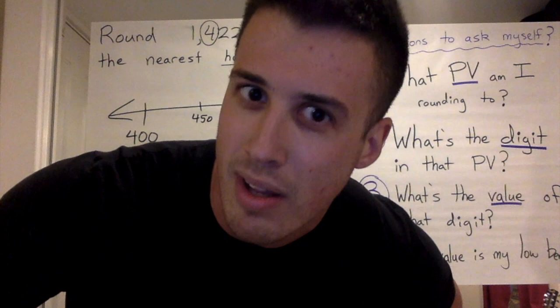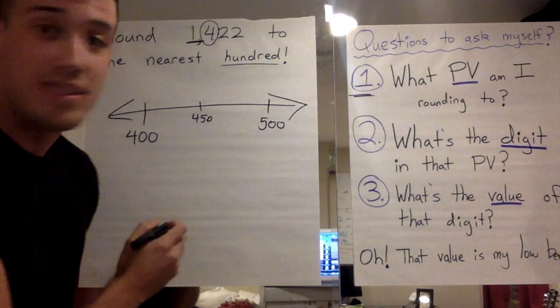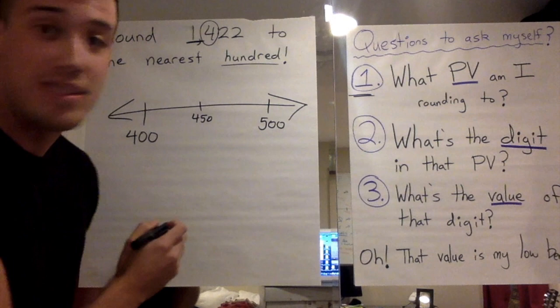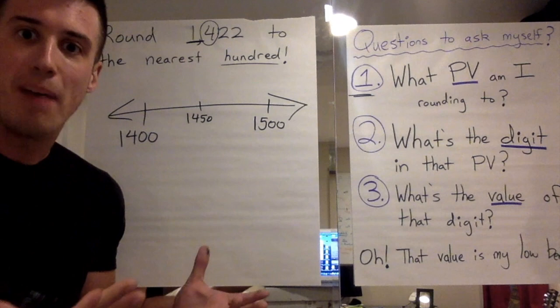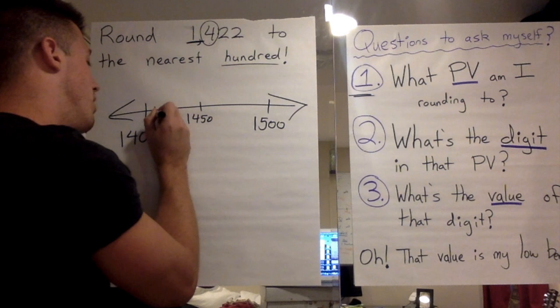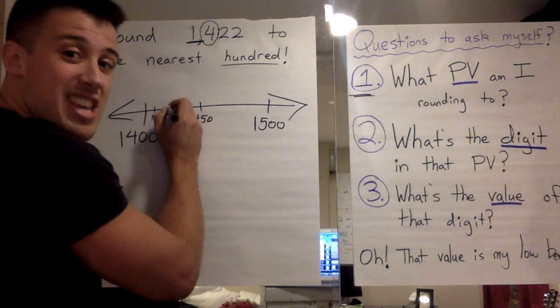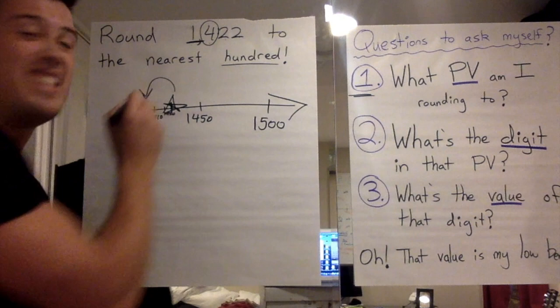What am I missing? I forgot about the hidden hundreds in the thousands place. There are hundreds hiding in that one thousand, so I need to take that one from the thousands place and add those hundreds in. Now my number line is set up correctly: 1,400 is my lower benchmark, 1,500 is my upper benchmark, and 1,450 is the midpoint. Where does 1,422 go? 1,400 … 1,410 … 1,420 — it goes around here. Since it's lower than the midpoint, I round down.